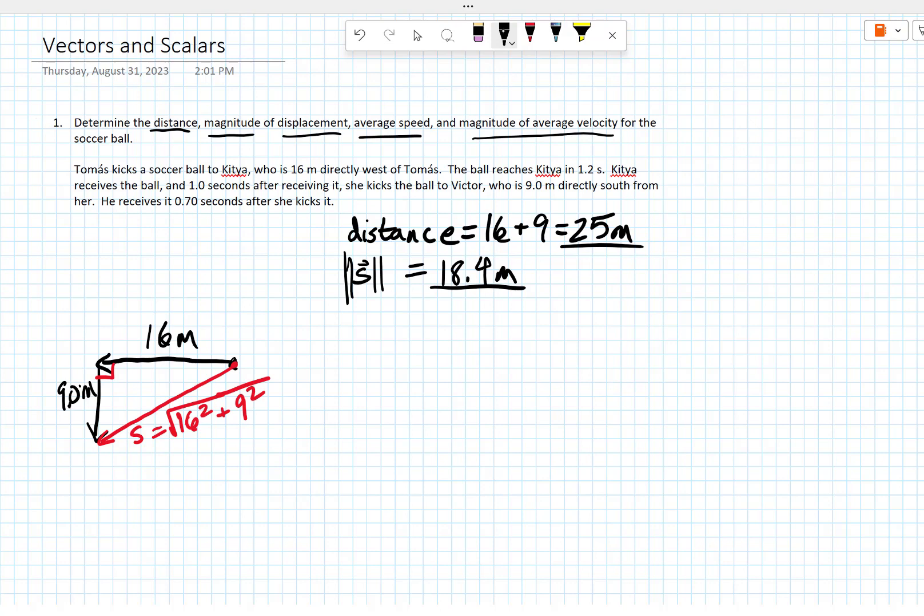The average speed is just equal to distance over time. And our average velocity, which I will use v bar for average velocity, that's going to be our displacement over time.